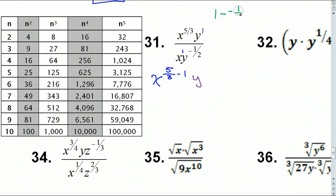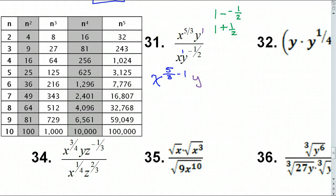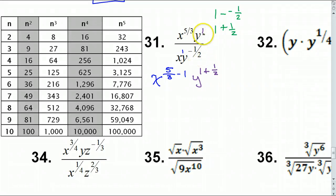When you have a double negative like 1 minus negative 1/2, you add, making it 1 plus 1/2. Any time the exponent in the denominator is negative you'll wind up adding. So we just need to do this subtraction for the X's and this addition for the Y's.